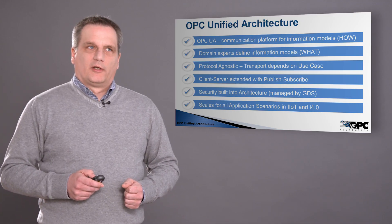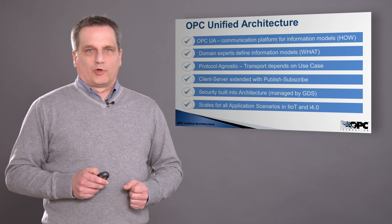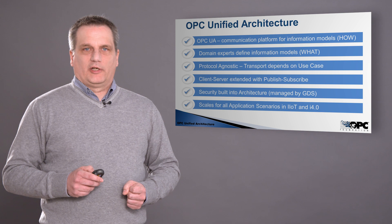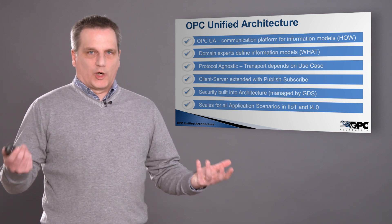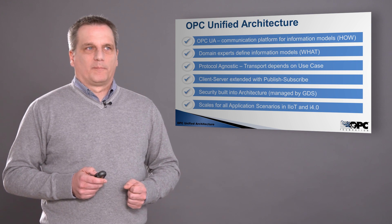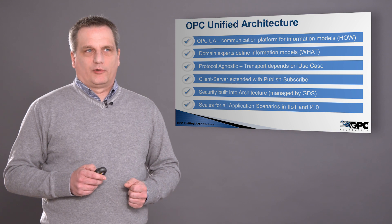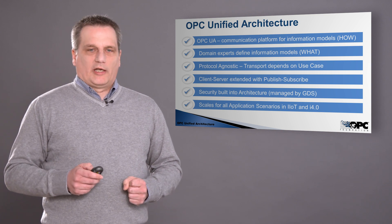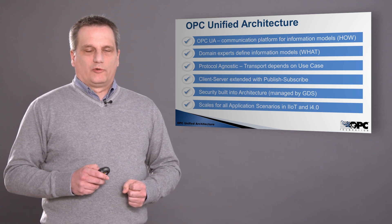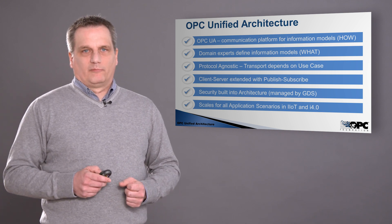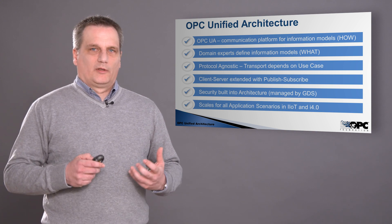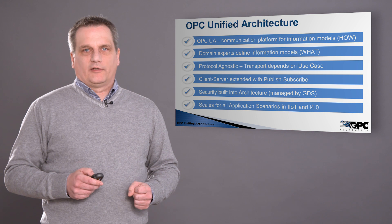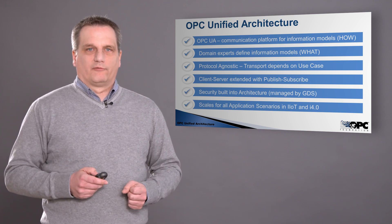To summarize: OPC Unified Architecture is a communication platform for information models which define how information is described, with domain expert and companion specifications sitting on top of that to describe what kind of information is to be exposed. It is protocol agnostic, so we have different transports depending on the use case. You can either use the client-server model, which has now been extended with the publish-subscribe communication model to cover all different use cases in all kinds of communication architectures. In addition, security is built into the architecture, and there is an additional tool called the GDS to manage this security from a central point in the network.